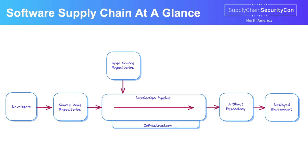Before we start, I want to take a step back and look at what is software supply chain at a glance — where it covers everything from trusting who is contributing to your code base, how that code base is getting pulled into your automated DevSecOps pipeline, and what dependencies are being pulled into that pipeline.